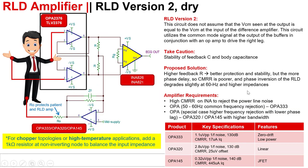This circuit does not assume that the common mode voltage seen at the output is equal to the common mode voltage at the input of the instrumentation amplifier. This circuit utilizes the common mode signal at the input of the amplifier in conjunction with an amp to drive the right leg. Since this application has the same amplifier requirements as the previous application, we recommend the same amplifiers here for the RLD.